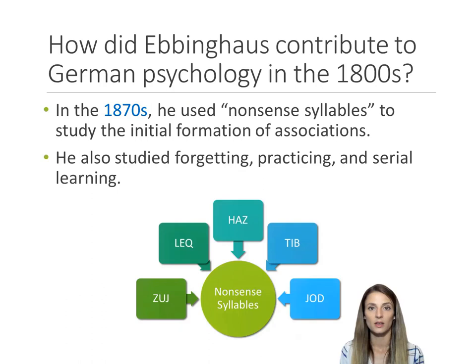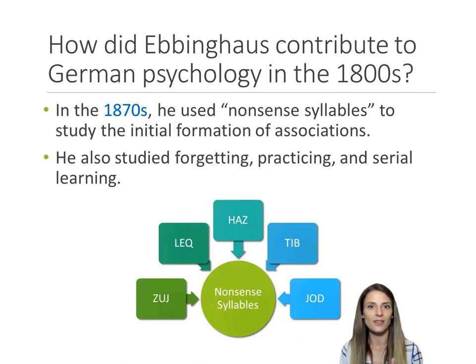In the 1870s, Ebbinghaus began to study memory using what he called nonsense syllables. I have a couple of examples at the bottom of the screen. These are syllables — things that can be pronounced, but that have no real meaning to the test taker.